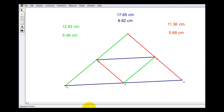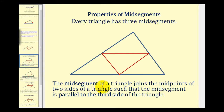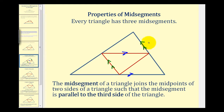Let's go ahead and formalize our observations. First, the mid-segment of a triangle joins the midpoints of two sides of a triangle and is parallel to the third side. So this mid-segment here is parallel to this side of the triangle. This mid-segment here is parallel to this side of the triangle. And this mid-segment is parallel to this side of the triangle.